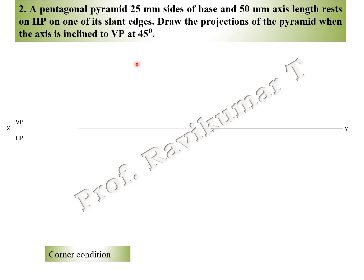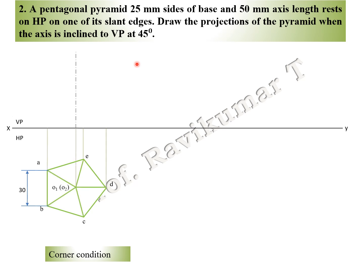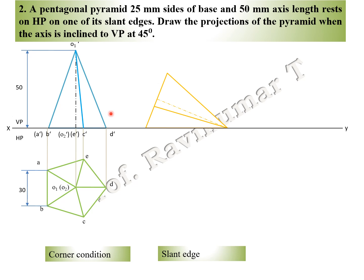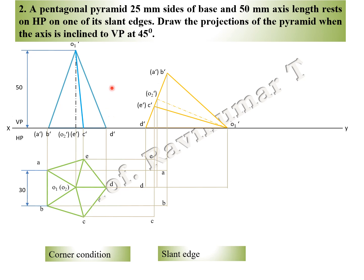The first and second positions are the same as the previous problem, so no need to spend much time. First position: top view — all diagonal lines visible, naming done. Front view: axis is 50mm, join points, naming done. B dash is visible, A dash is invisible. C is visible, E is invisible. Place the slant edge on the XY line, draw projection lines downward. Looking from the top, the complete face is visible. Outer edges E to O, C to O, A to O, B to O are visible; D to O is invisible.